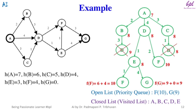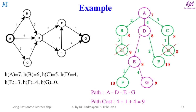In the open list we have two nodes: F and G. G has the smaller evaluated value, so node G will be selected. Node G is the goal node, so the algorithm will terminate here. The path found is A → D → E → G and the path cost is 4 + 1 + 4 = 9. Always remember: the heuristic of a goal node is always 0 and the path cost of the initial node is always 0.